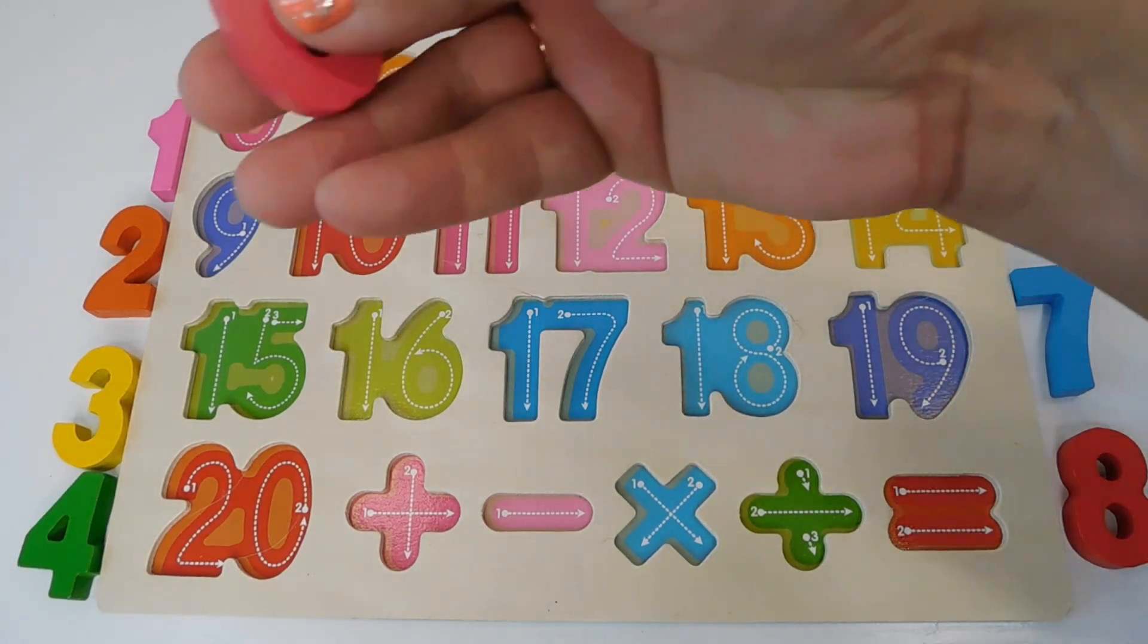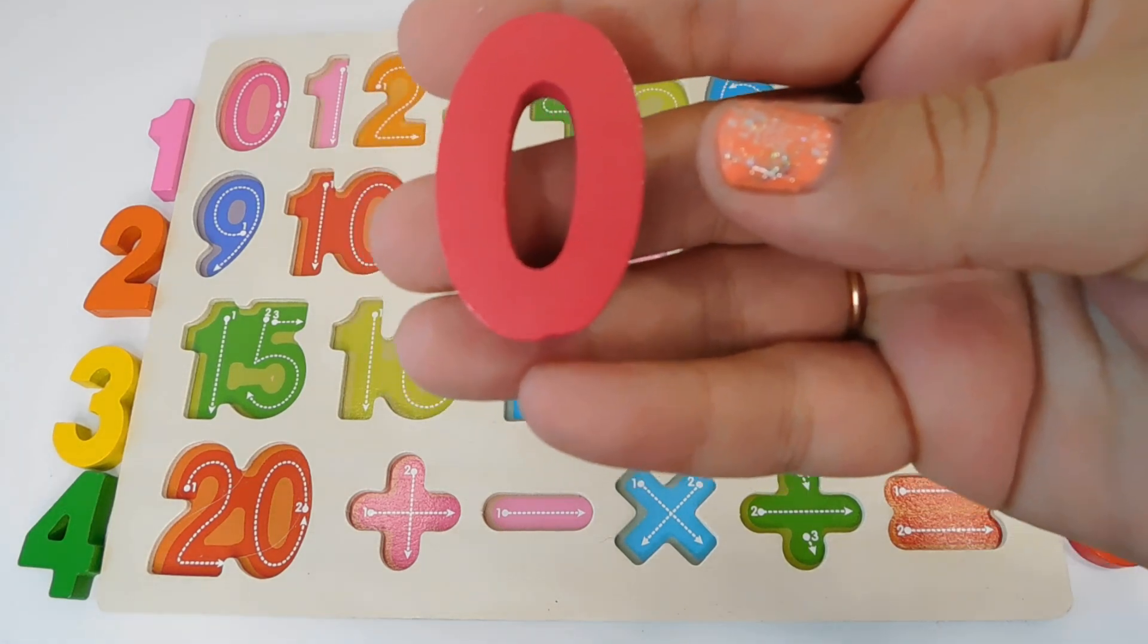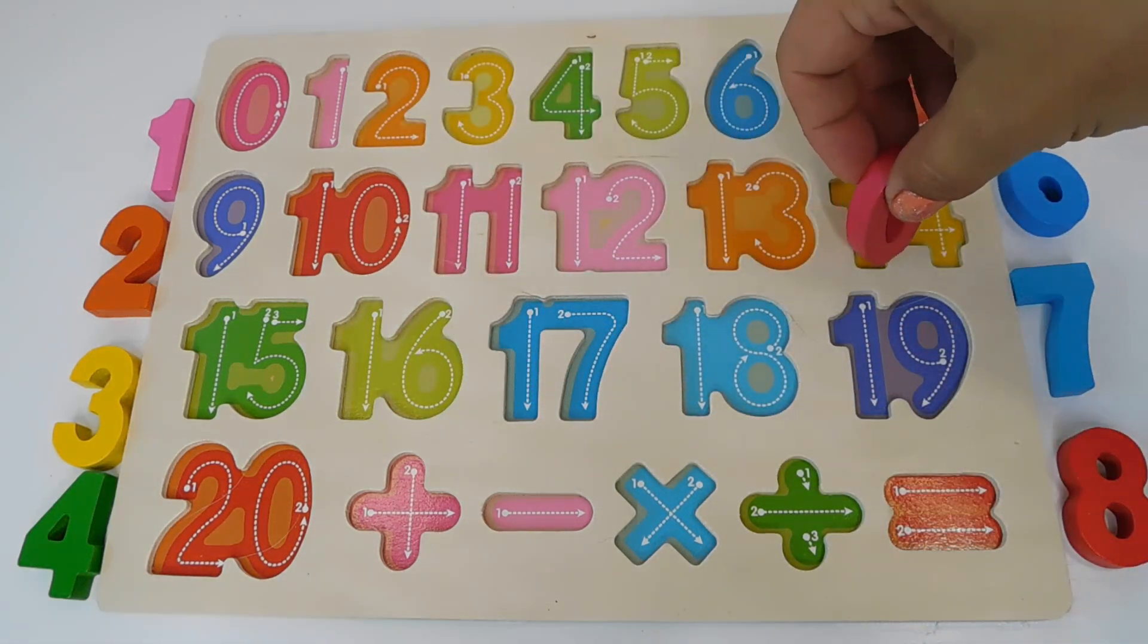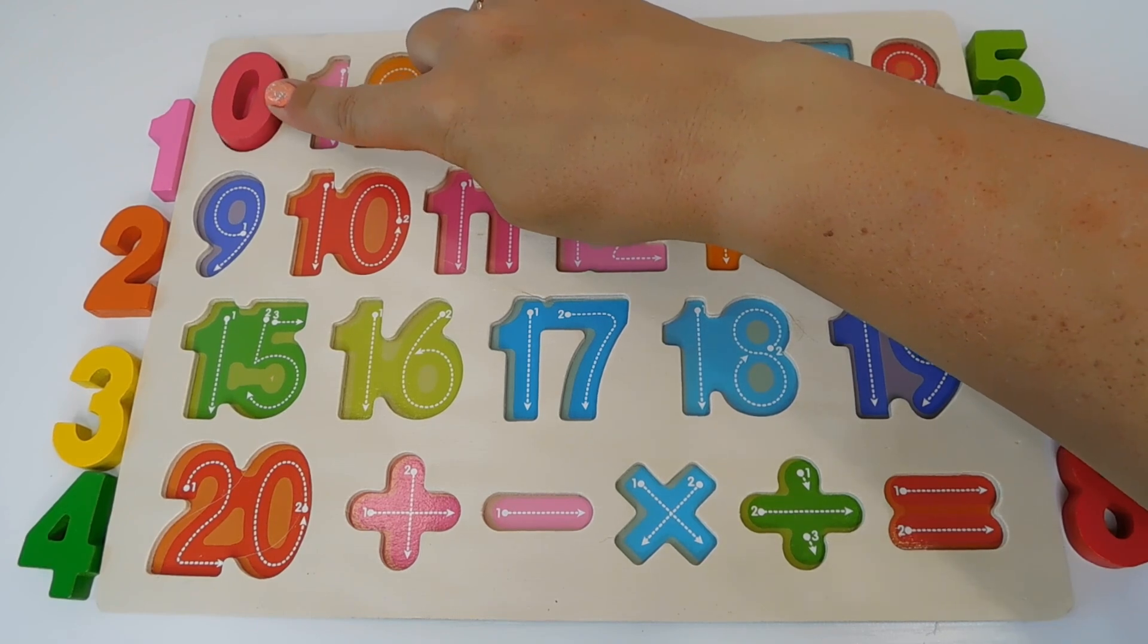This first one is pink and it is a 0. Pink, 0. Where does the 0 go? There it is, 0.